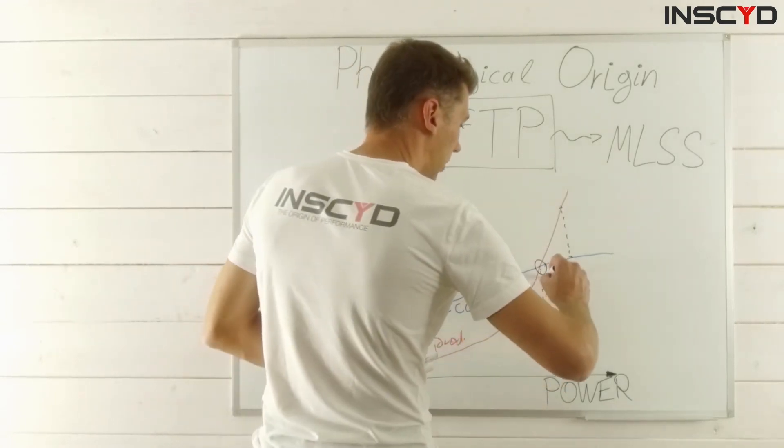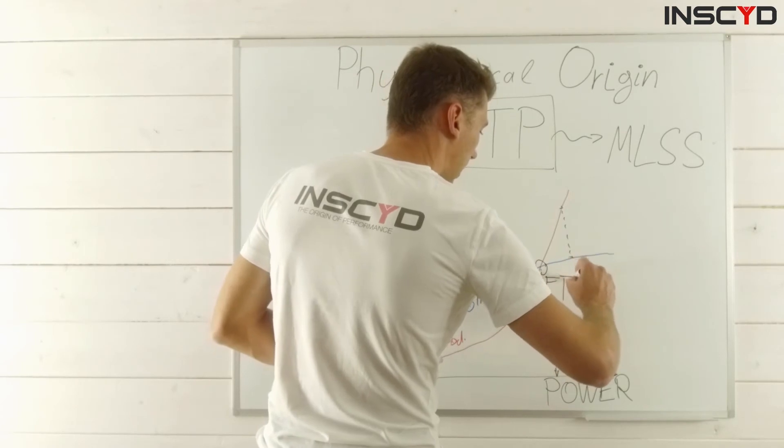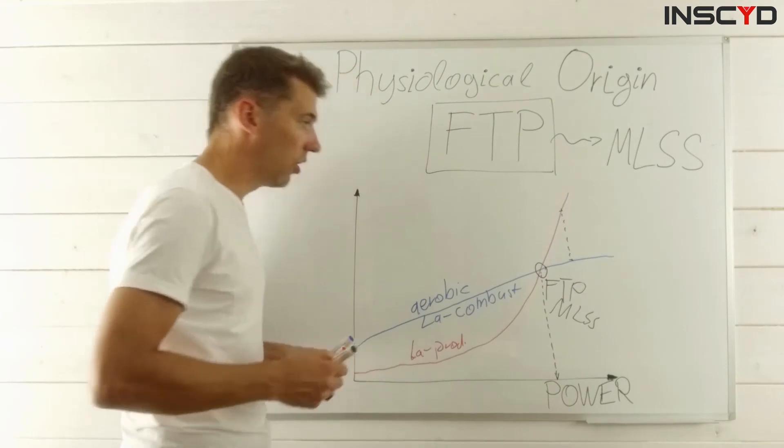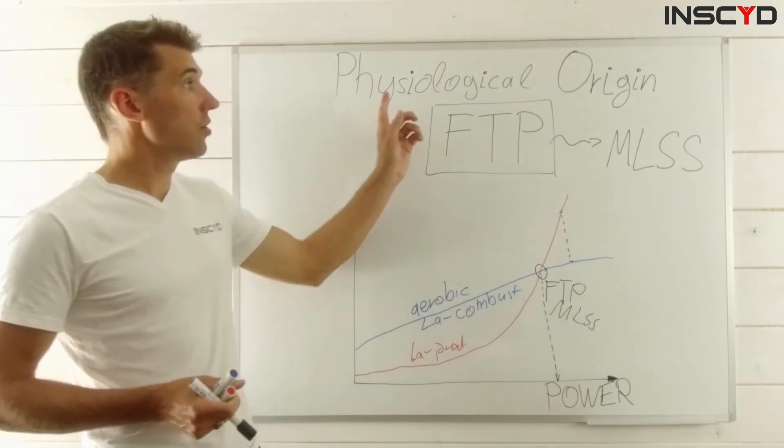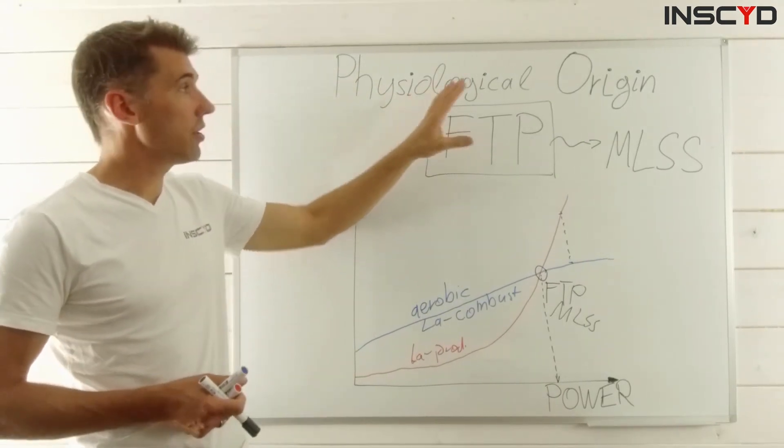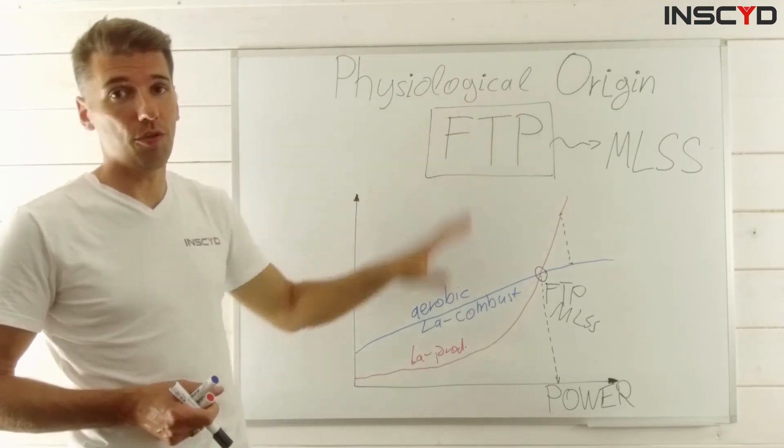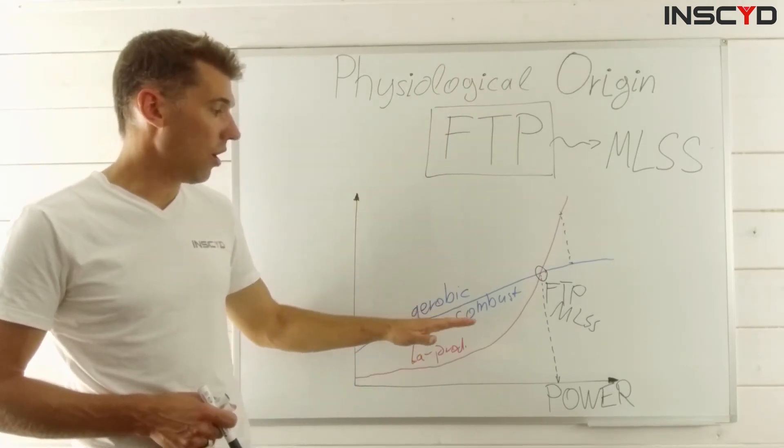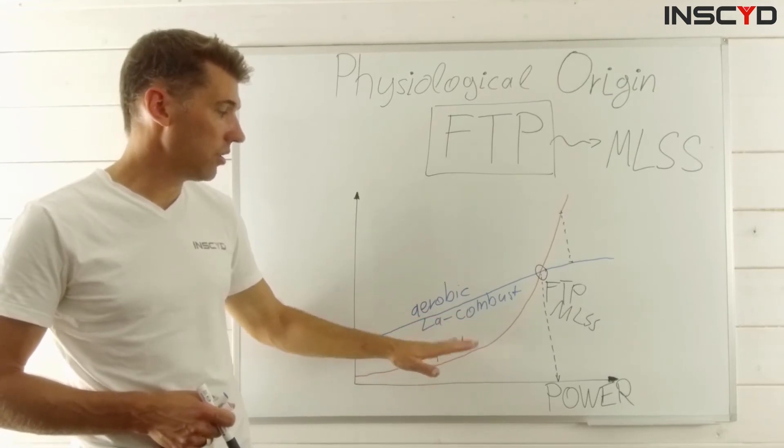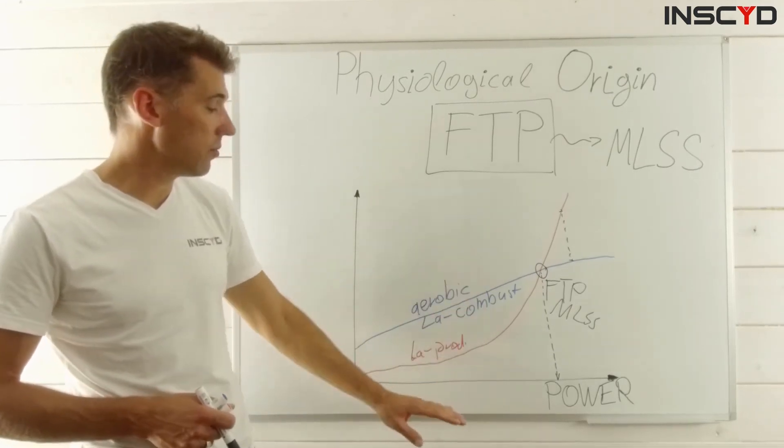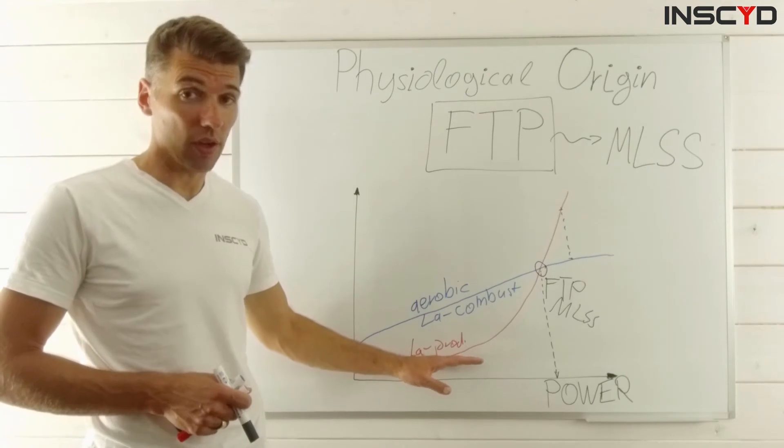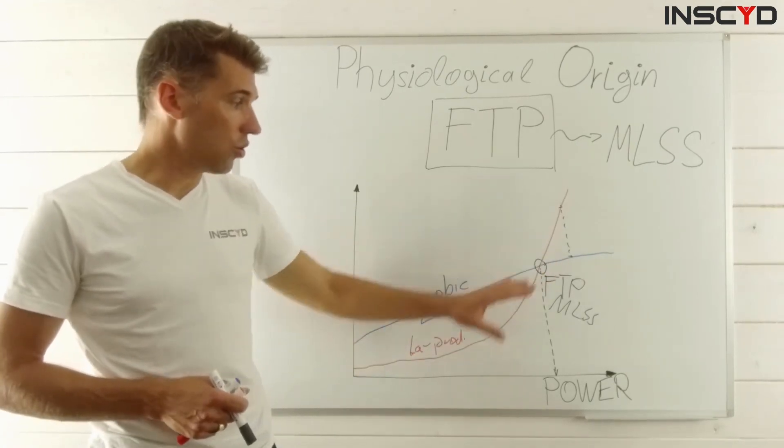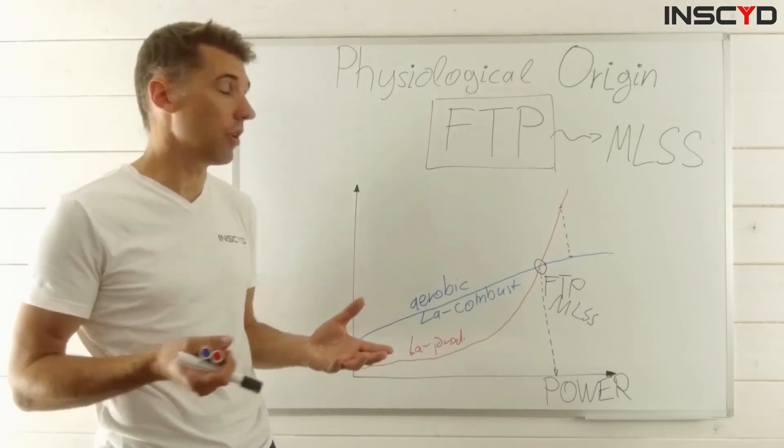So the answer to the original question - what is the physiological origin of FTP - is the interaction of the lactate combustion, aerobic metabolism, and the glycolytic or anaerobic metabolism. Those two in combination or in concert, if you want, create a power output at your threshold, physiologically speaking.